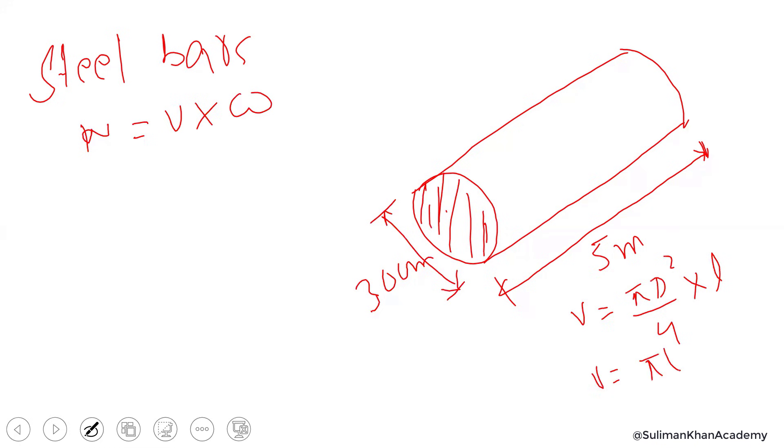Now you have to put values over here. For d, that's 30 centimeters or 0.3 meters, divided by 4 times the length, which is 5 meters. The volume is 0.353 cubic meters. This is the volume.